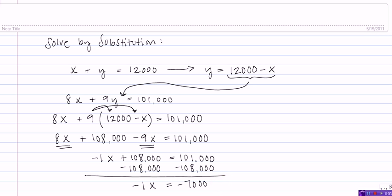Now, we just need to solve this for X. So, I'm going to divide both sides of this equation by negative 1. And so, X equals 7,000.